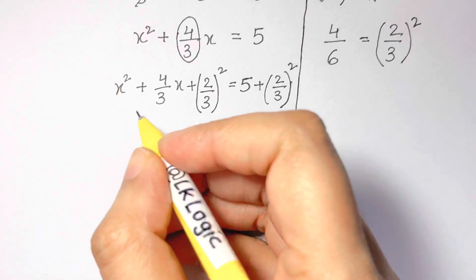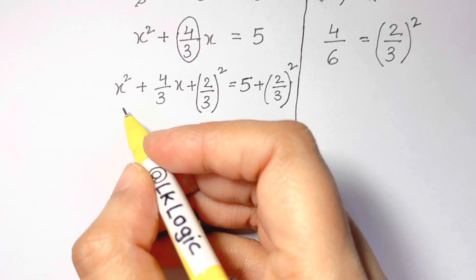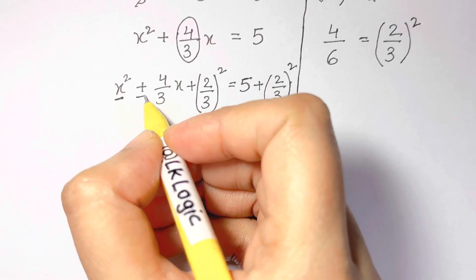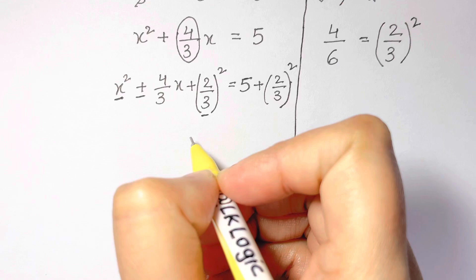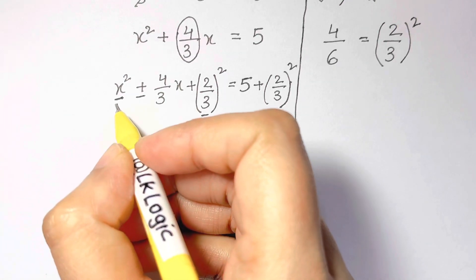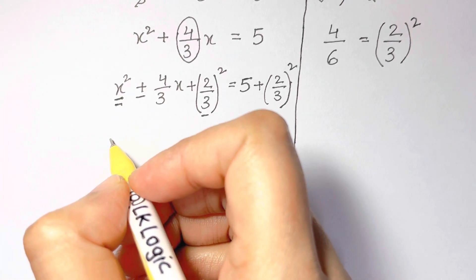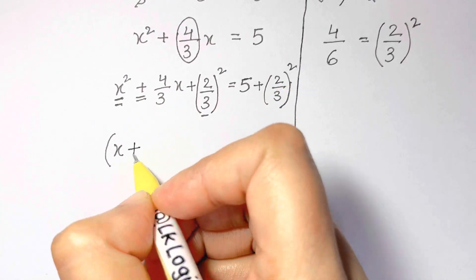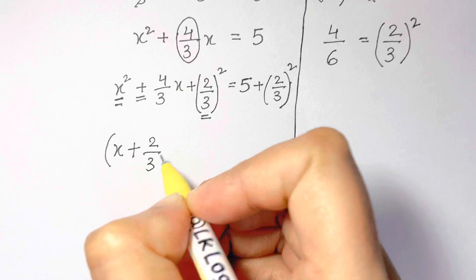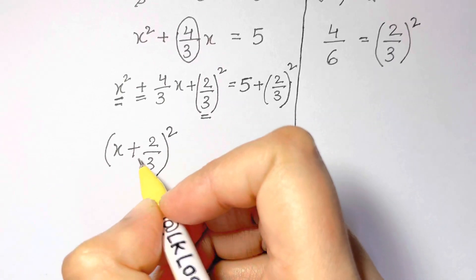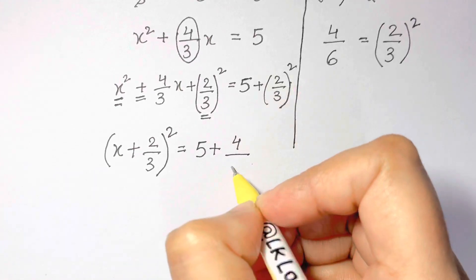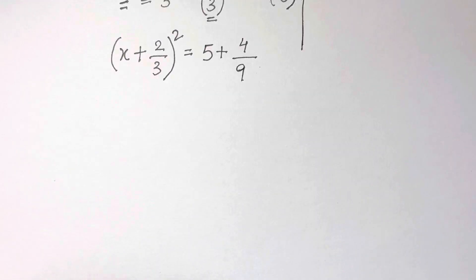Now you can see this left hand side is a complete square. You have x and then the positive sign in between and this 2/3 inside this parenthesis. Let's go ahead and write it in this parenthesis. So we have (x + 2/3)² = 5 plus, 2 squared is 4 and 3 squared is 9, so you have 4/9.